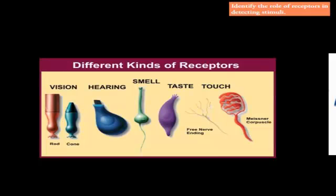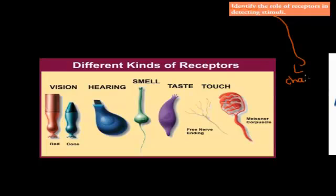The first dot point is quite straightforward. It just says identify the role of receptors in detecting change, or detecting stimuli. Identify just means name. We need to name the role of receptors in detecting stimuli. Stimuli is a change in the environment.